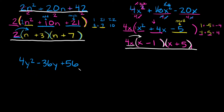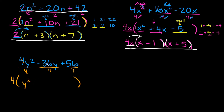So here we have 4y squared minus 36y plus 56. Again, the first thing you want to do is factor out your greatest common factor. In this case the greatest common factor is 4. So 4y squared divided by 4 leaves y squared. Negative 36y divided by 4 is negative 9y. And 56 divided by 4 is positive 14. So we end up with a quadratic with a leading coefficient of 1: y squared minus 9y plus 14.